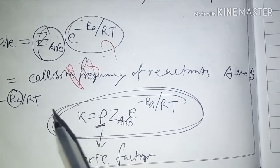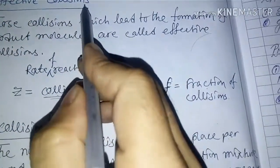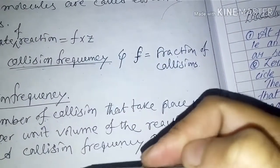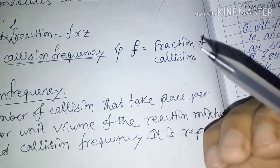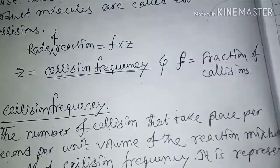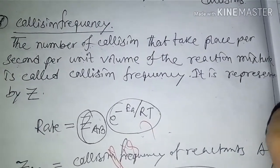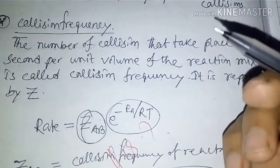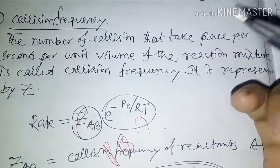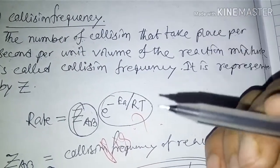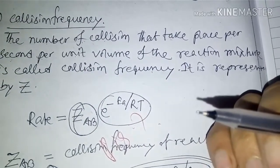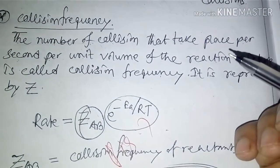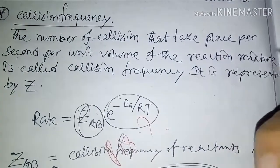So to summarize: effective collision leads to product formation, and collision frequency is the number of collisions per second per unit volume of the reaction. In the next video I will discuss numericals related to the Arrhenius equation, effective collisions, collision theory, and temperature coefficient. Thank you, and please subscribe for upcoming videos.